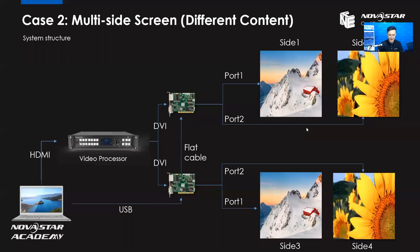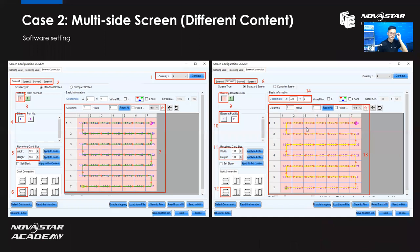Let's see more details about how to set this up in NovaLCT. We are doing four screens, so we need to set the quantity to four, then click configure. You will see screen one, two, three, and four appear. Configure them one by one. Screen one is using sending card number one, Ethernet port one, and the receiving card size is 104 by 104. For the mapping, because there are many receiving cards, you can use the quick connection feature instead of doing them manually one by one.